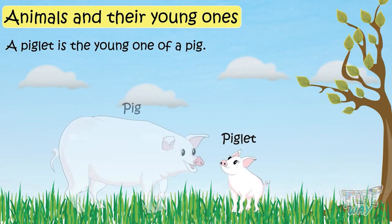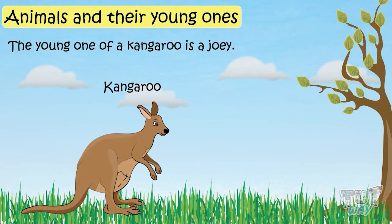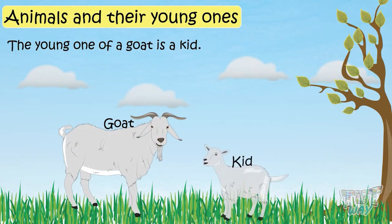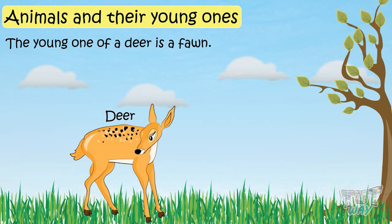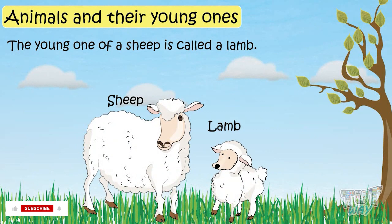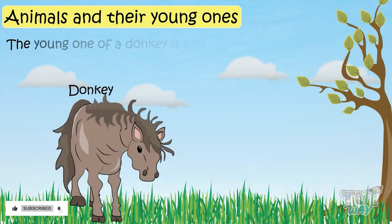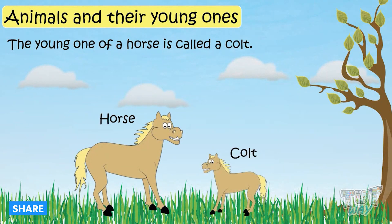A piglet is the young one of a pig, an owlet of an owl, and a joey of a kangaroo. A kid is the young one of both a goat and a rabbit, a fawn of a deer, a lamb of a sheep, a calf of a cow, a foal of a donkey, and a colt of a horse.